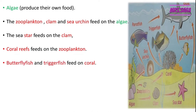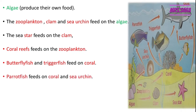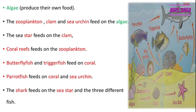Butterflyfish and triggerfish feed on coral reef, so they are considered tertiary consumers to the coral reef. The parrotfish feeds on the coral reef and the sea urchin, so parrotfish is considered a tertiary consumer. The shark feeds on the sea star and the three different fish, so shark is also considered a tertiary consumer, Primary 5.